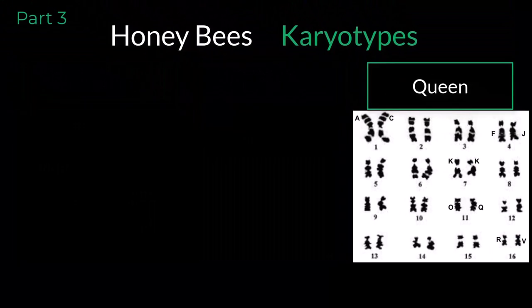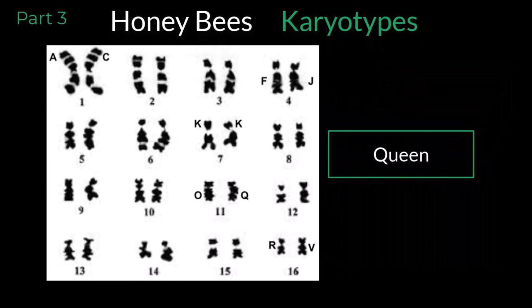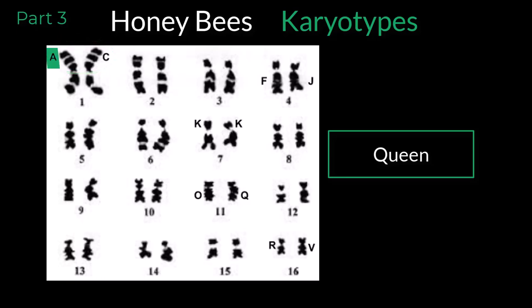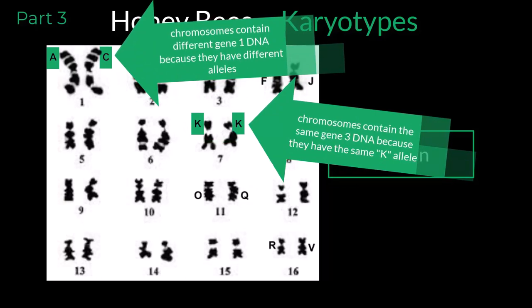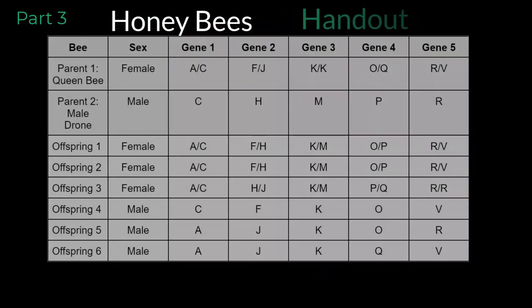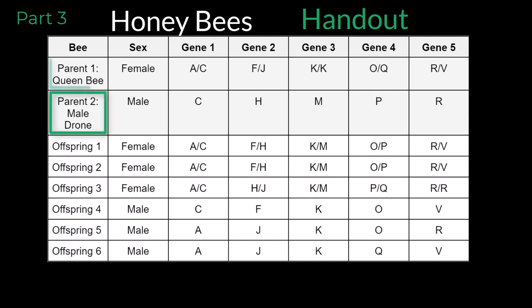Let's start by zooming in on gene 1 on the queen bee's karyotype. Gene 1 is found near the top of chromosome 1. The queen bee has two different alleles for gene 1: the A allele and the C allele. This means that the DNA for this gene is different at this particular location. Now let's look at gene 3, which is found on chromosome number 7. The queen bee has two identical alleles for this gene because both copies of her chromosome 7 contain the K allele. This means that the DNA sequence is identical at this particular part of the chromosome. On your handout, you will see the alleles for a male drone, a queen bee, and six different offspring that have been produced after mating.